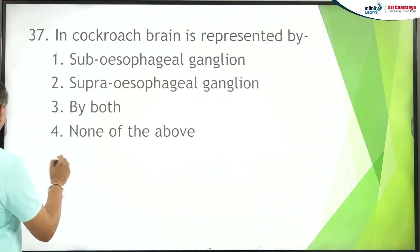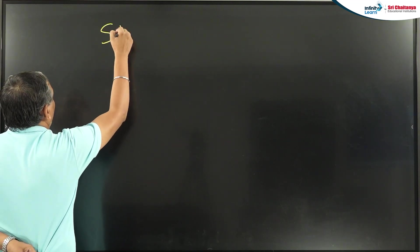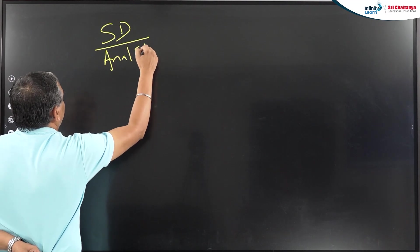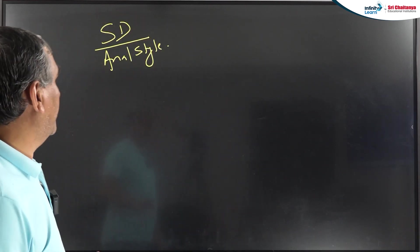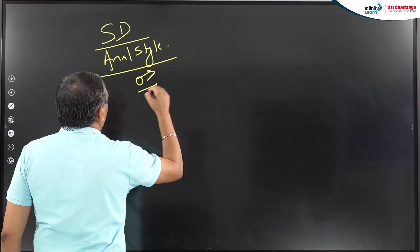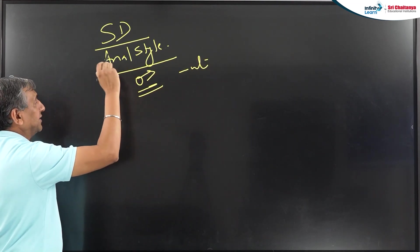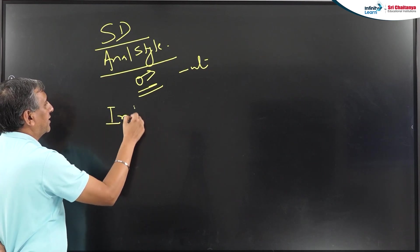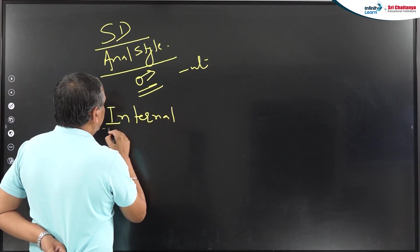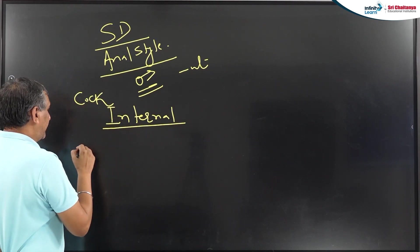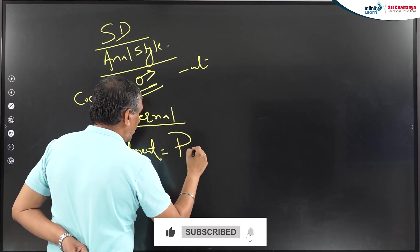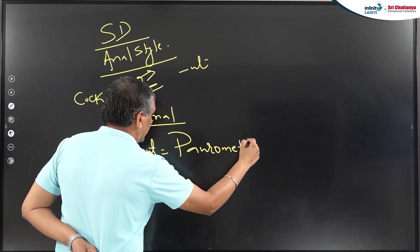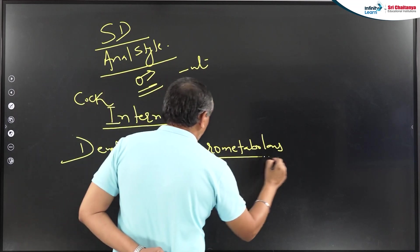Regarding the reproductive system: cockroach shows sexual dimorphism. The anal style is a structure present only in the male cockroach and absent in the female. The type of fertilization in cockroach is internal fertilization. The type of development is paurometabolous, meaning gradual development — from eggs there is development of nymph, and from nymph there is development of adults.